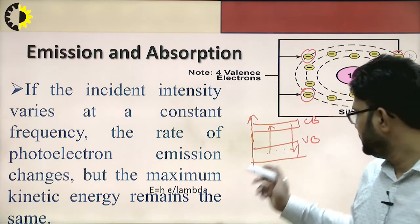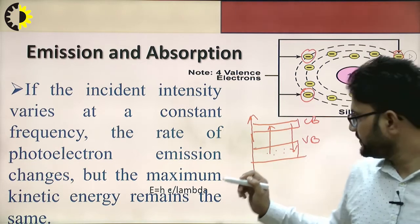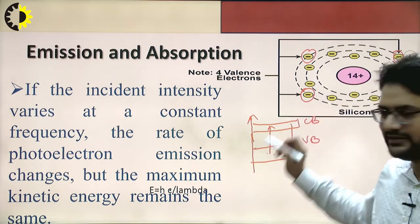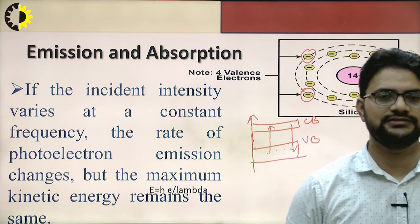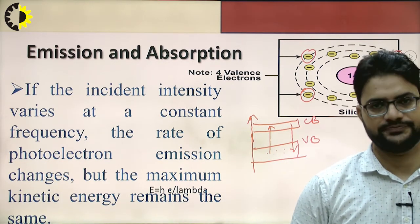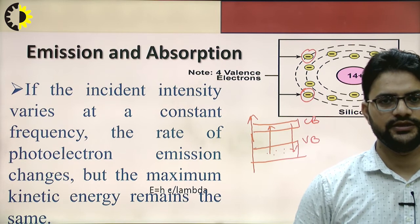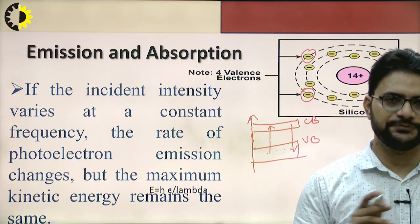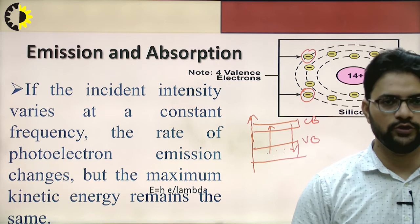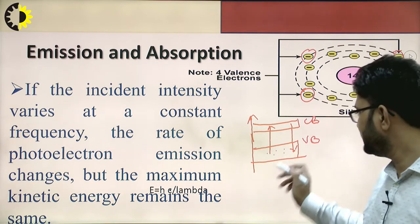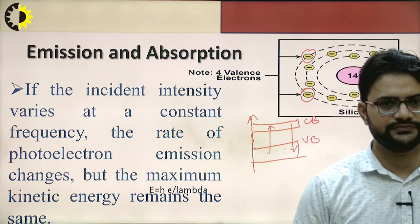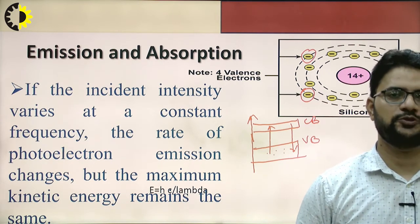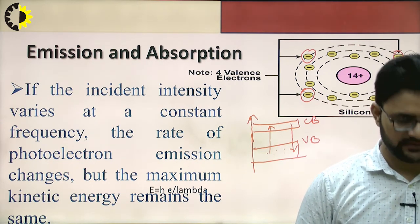The movement of the electron from the high energy level towards the lower energy level is called absorption. The electron will be absorbed by the hole which was created at the valence band. This process is called absorption.